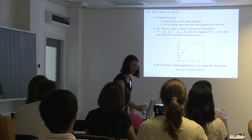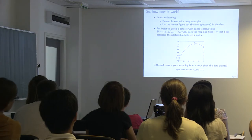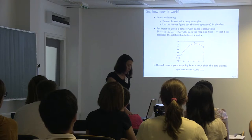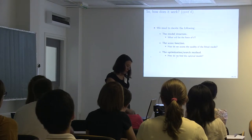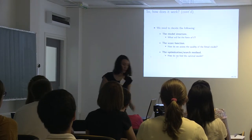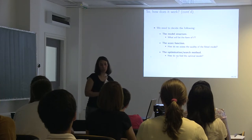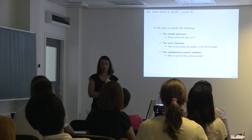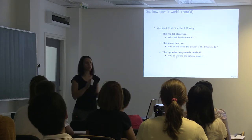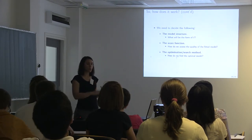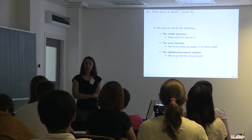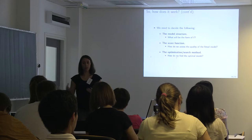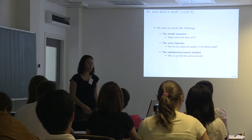To build a machine learning algorithm, we need to decide the model structure — are we going to use a linear model or a polynomial model? If we use a polynomial, what order will it be — second degree, third degree, and so on?